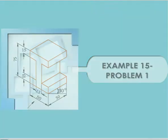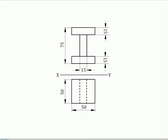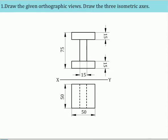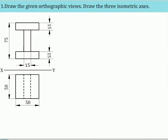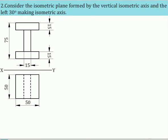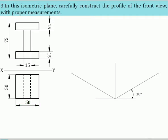Example problem: Draw the given orthographic views of the solid. Draw the three isometric axes. Consider the isometric plane formed by the vertical isometric axis and the left 30-degree making isometric axis. In this isometric plane, carefully construct the profile of the front view with proper measurements.